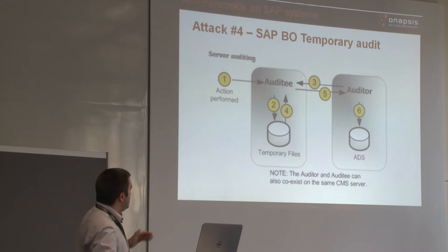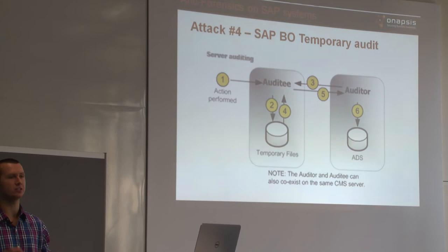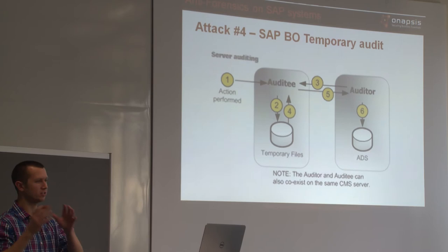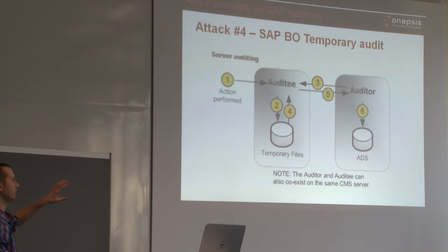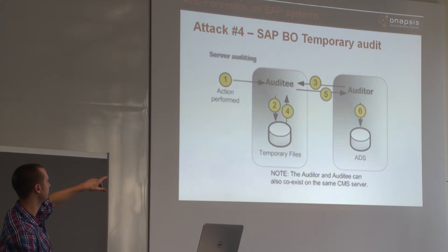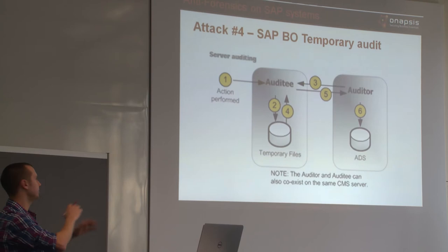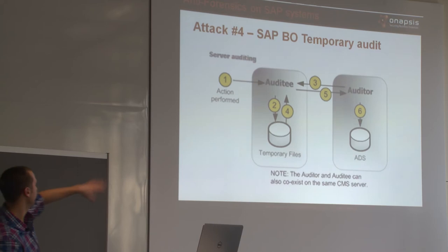The fourth attack, described by Will, involves Business Objects. Business Objects uses an audit data store (ADS) — a series of tables storing audit events. There is a gap between when an event occurs and when it reaches the ADS. First, an action occurs (e.g., a user logs in) and the event is written to a temporary file on the auditee. The auditor periodically asks auditees for events; the auditee sends them, the auditor confirms receipt, and the temporary file is deleted. There is a window where the event exists in the temporary file but hasn't been written to the ADS.